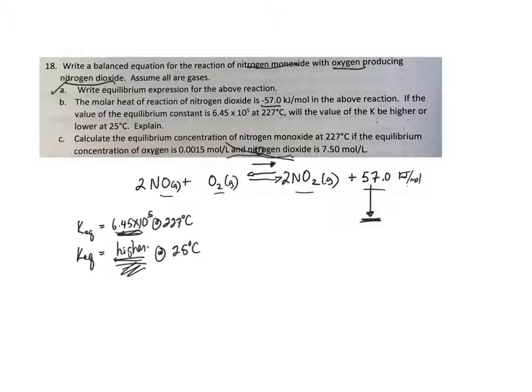Now it says C, calculate the equilibrium concentration of nitrogen monoxide at 227 and if the equilibrium concentration of oxygen is that and nitrogen dioxide is 7.5 and those are at equilibrium. So let me do that one too.